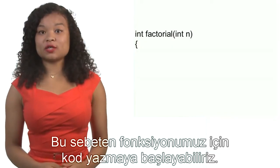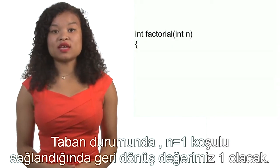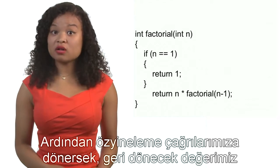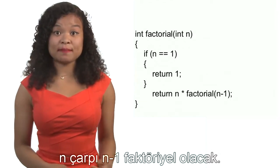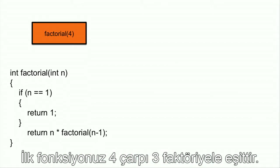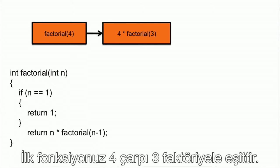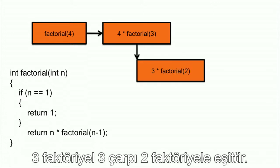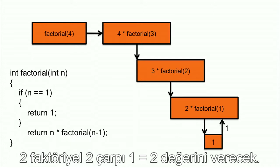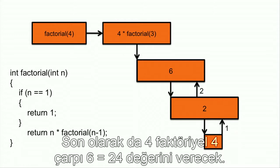Now we can move on to writing the code. For the base case, we have the condition n equals 1, where we return 1. Then for the recursive call, we return n times the factorial of n minus 1. Let's test this with factorial(4): it equals 4 times factorial(3); factorial(3) equals 3 times factorial(2); factorial(2) equals 2 times factorial(1), which returns 1. So factorial(2) returns 2, factorial(3) returns 6, and finally factorial(4) returns 4 times 6, which is 24.